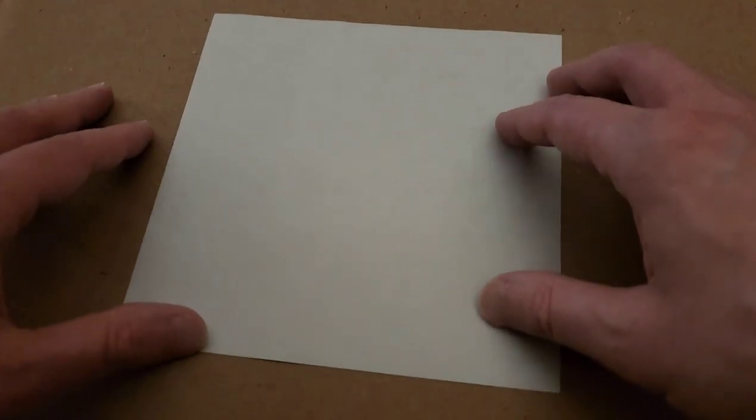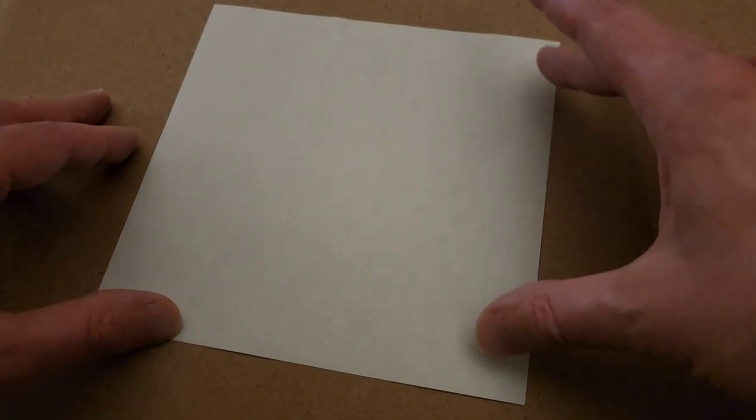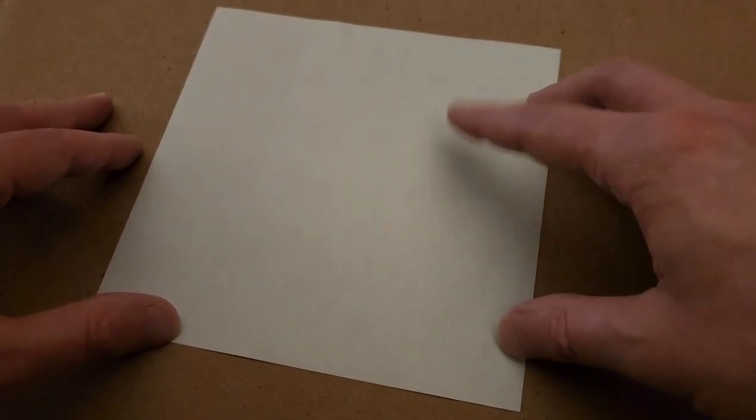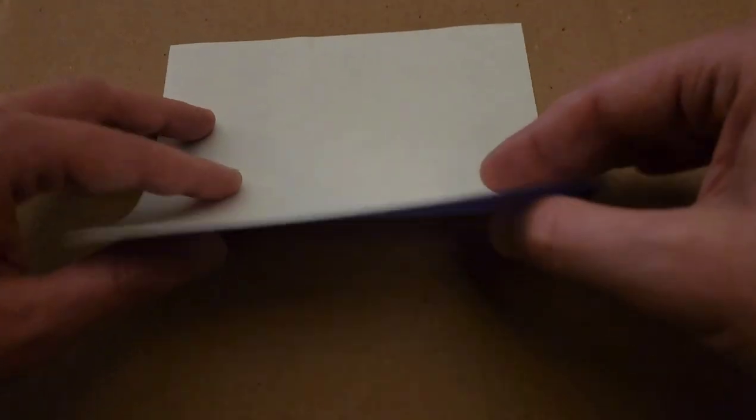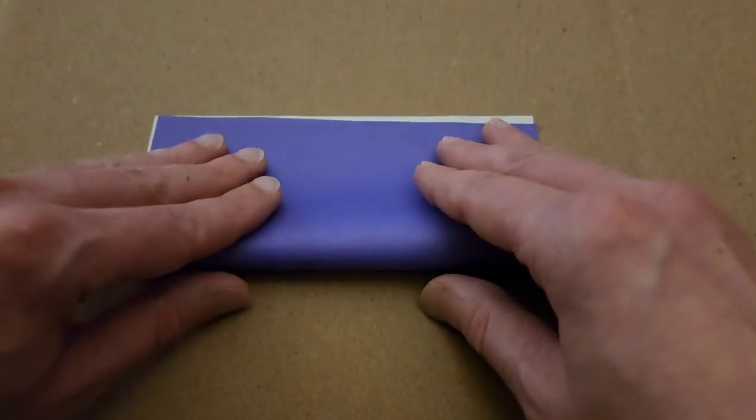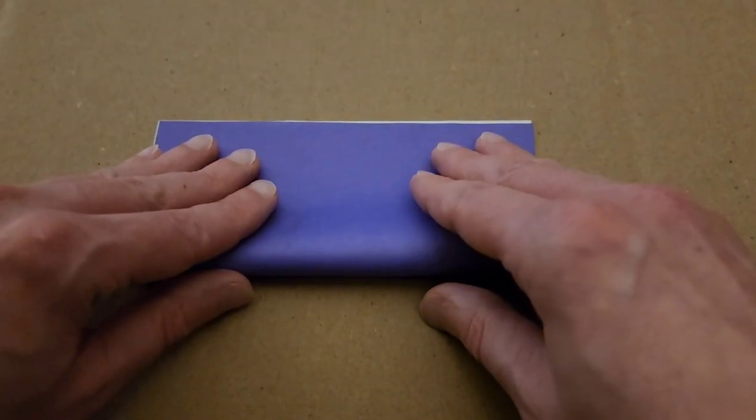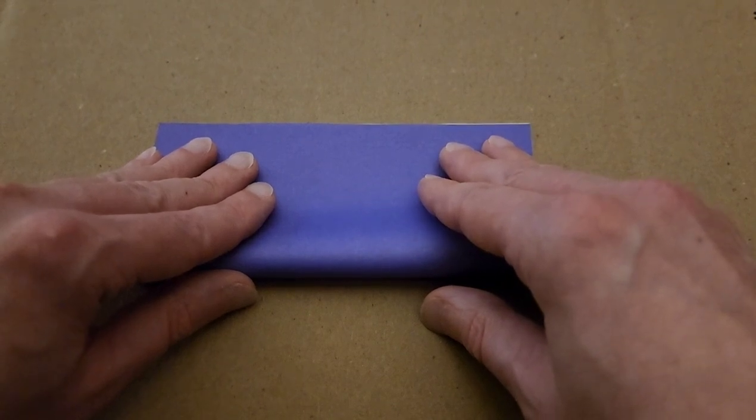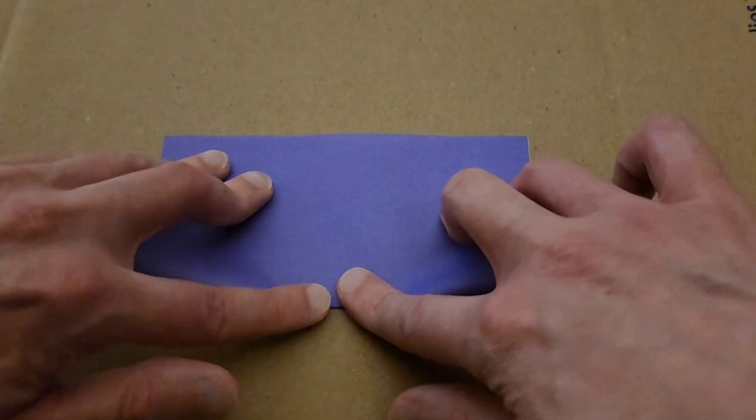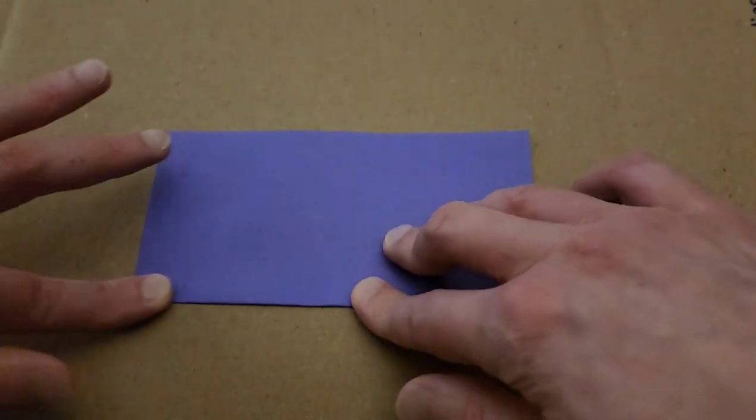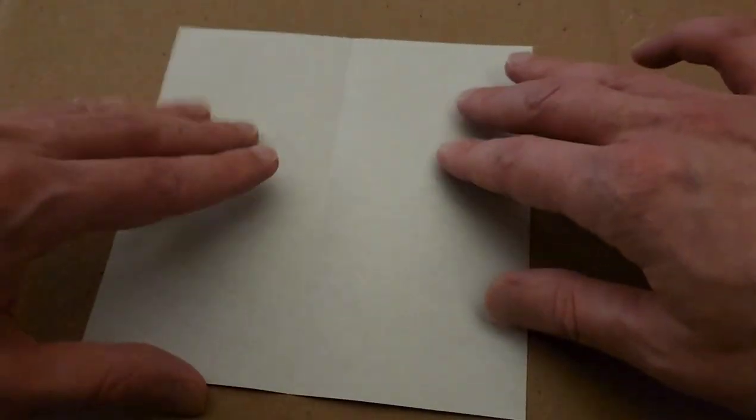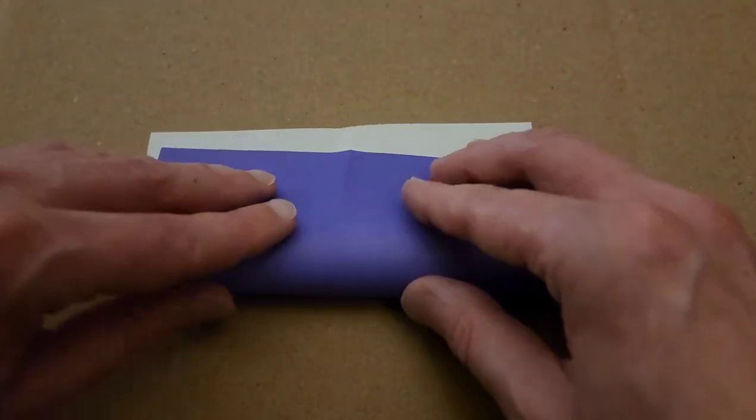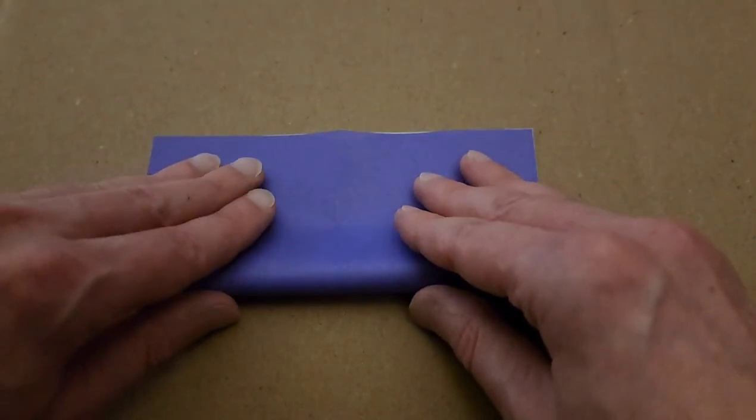Okie dokie. So first things first, if you want the colored side to be the showing side, you would have the colored side facing down as I have it right now. And we're going to start by folding our paper in half to make a rectangle. I'm just going to be doing some preliminary folds. So fold that in half, and then open. Turn and then fold it the other way in half to make a rectangle.